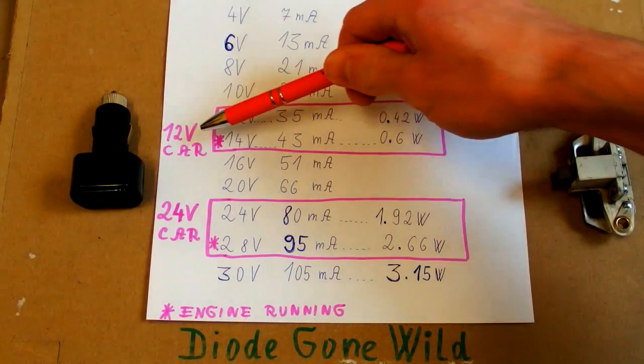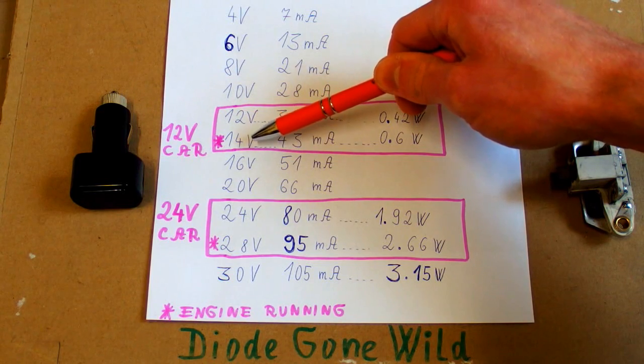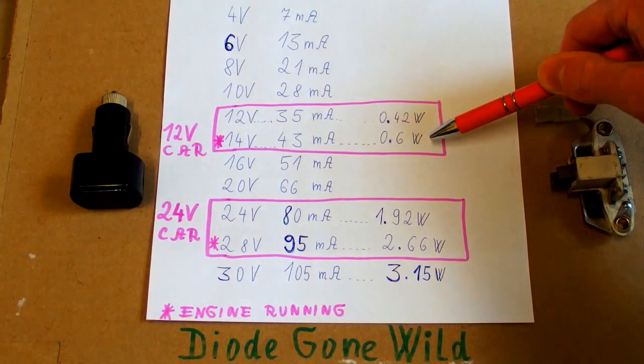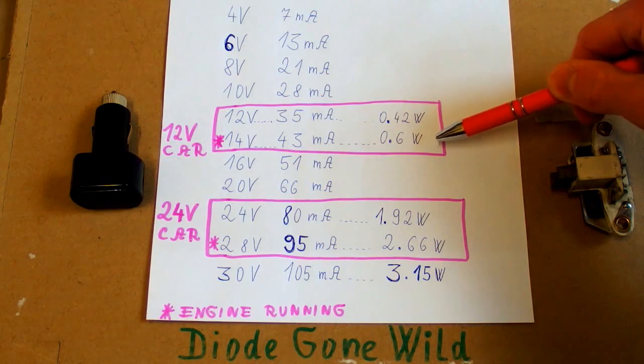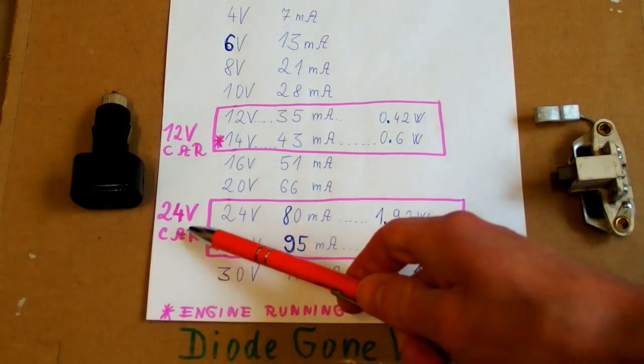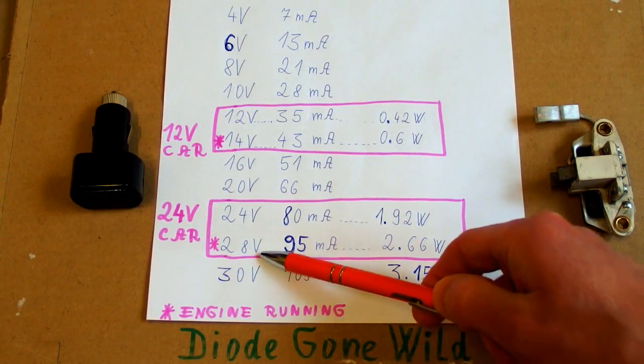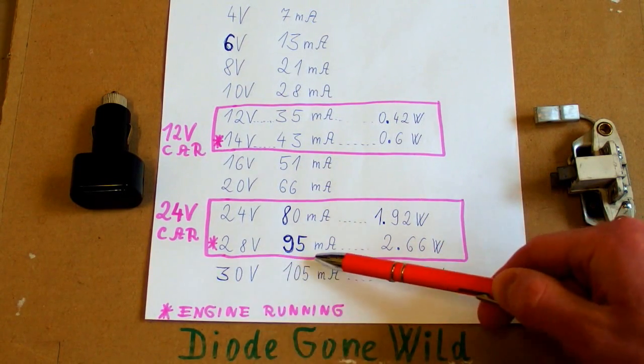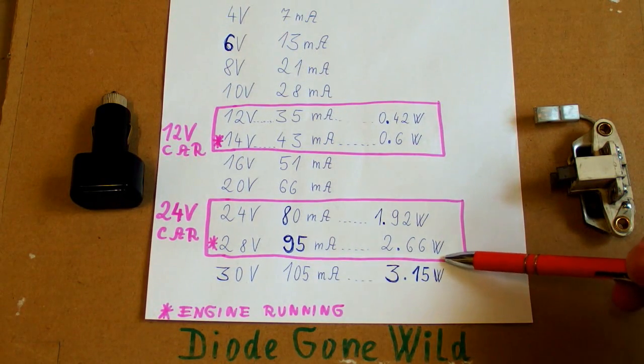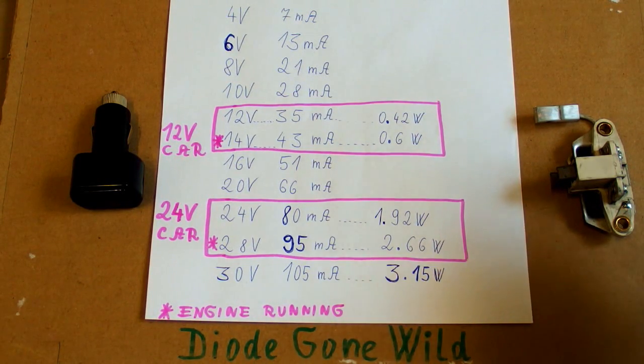A 12-volt car has about 14 volts when the engine is running and this device will draw about 43 milliamps and dissipate 0.6 watts. This is still kind of acceptable, but a 24-volt car will have about 28 volts with the engine running and this device will draw about 95 milliamps and dissipate 2.66 watts. And that's really a lot.